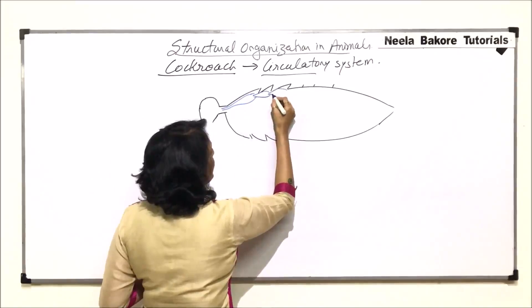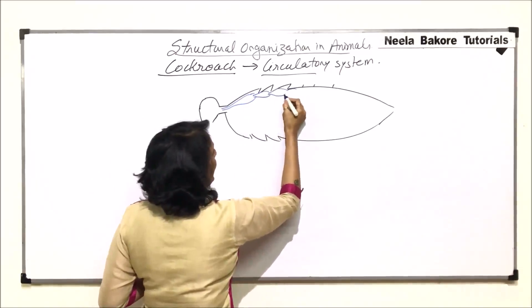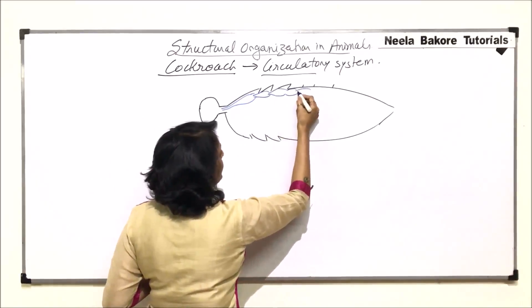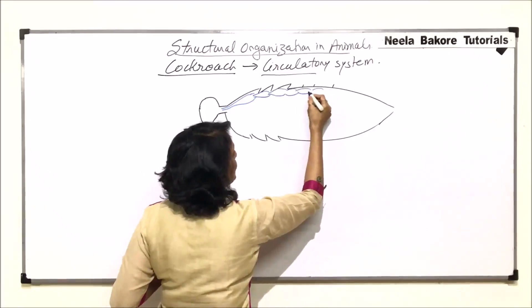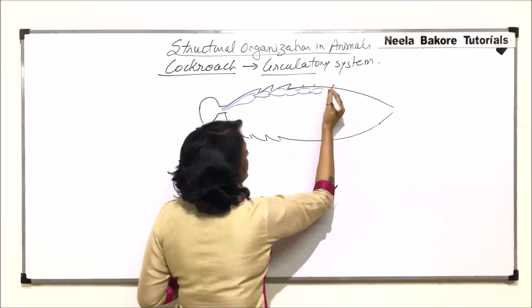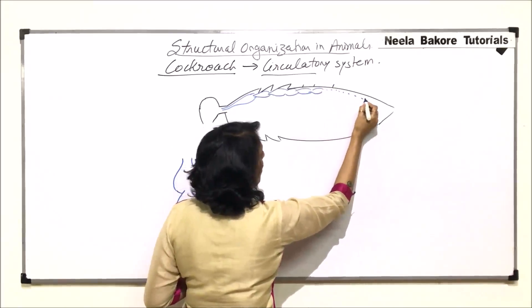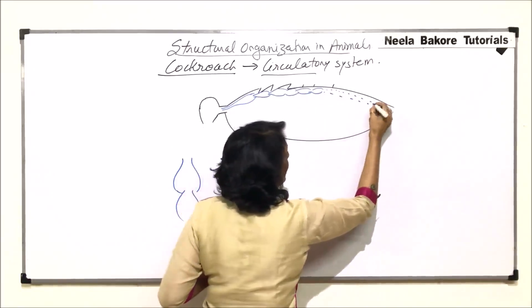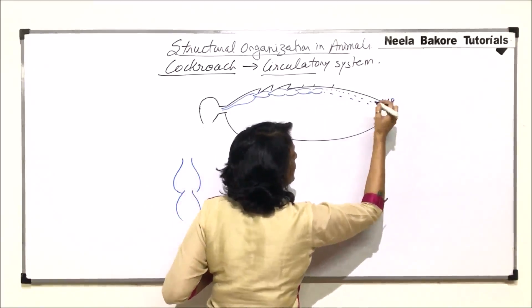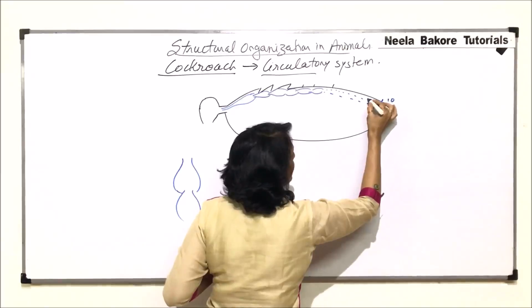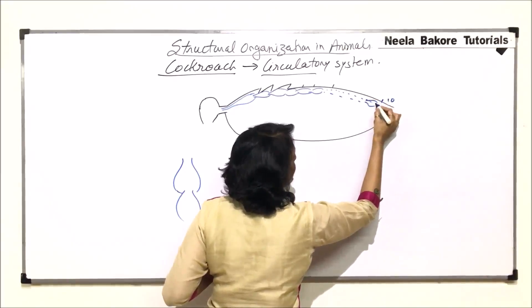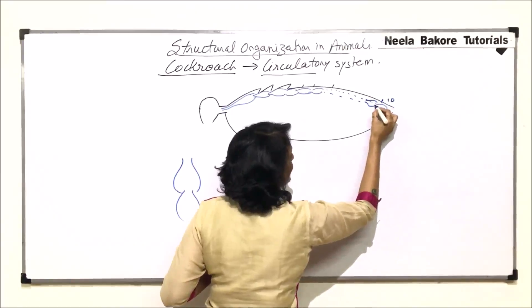The third one is in metathorax and then in all 10 abdominal segments. And as we talked of, so here all the segments are going to be there and the last one, say this is the 10th abdominal segment. So let me draw the one which is in 9th abdominal segment and this is the 10th one.